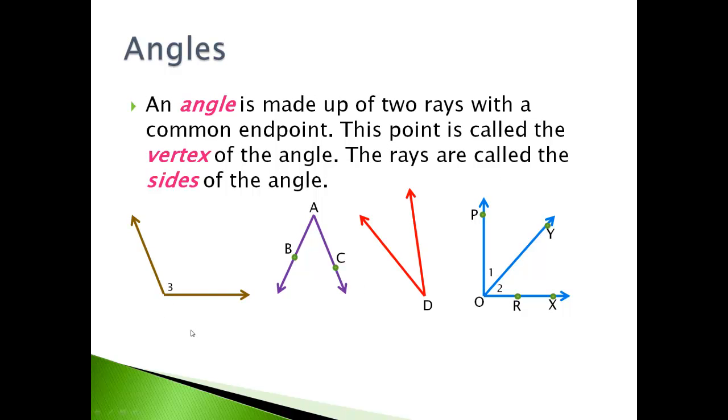So like this one, we would call angle three. Anytime you're naming an angle, you put a little angle out in front of it. This one, we could call angle A. We could call angle B, A, C. Or we could call it angle C, A, B. Now notice the difference between these two. What's similar and what's not? The A, because it's the vertex right there always has to go in the middle. It doesn't matter where you start and where you finish, but the vertex has to go in the middle. So it's going to be three points.